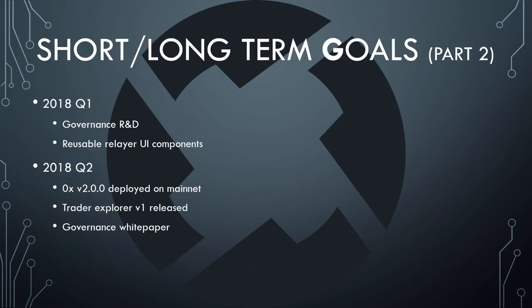For 2018, the roadmap is a little slower — I'm sure it will get updated as they get a better idea of what's happening. It includes reusable layer UI components, version two deployed on the mainnet, governance white paper, and trader explorer version one release.